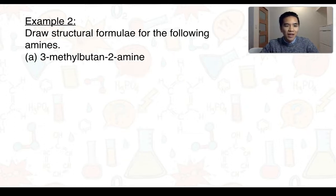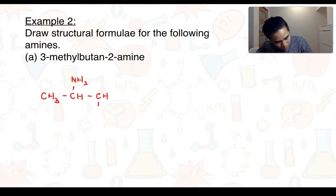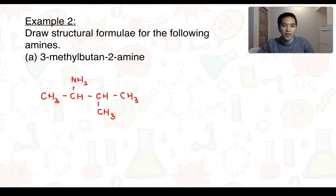For example 2, we're going to look at how to draw structure formulae for a range of amines. For part A, we've got 3-methylbutan-2-amine. Let's start off with the butane part. So this indicates that there are 4 carbon atoms in the longest chain. The 2 indicates that there is an amino group on carbon number 2. And then we have a methyl group that is positioned on carbon 3. So let's have a look at drawing that now. So there we have the structure for 3-methylbutan-2-amine.